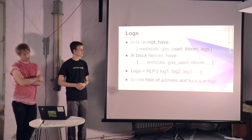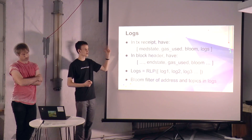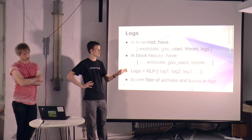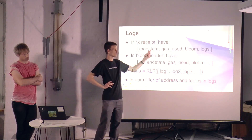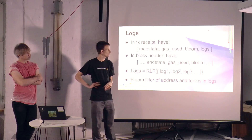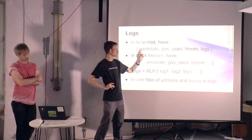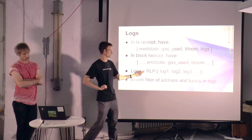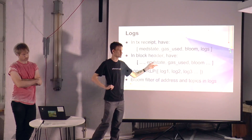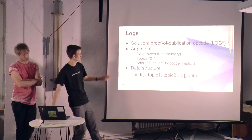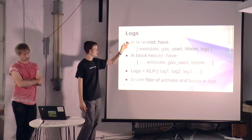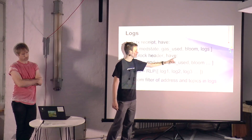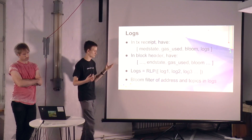So, receipts. The way a transaction receipt looks: the 'med state' is the state root after processing that particular transaction. Gas used is a counter of how much gas was used after processing the transaction. There's also a bloom filter — we'll talk about that a bit later — and logs, which is just an RLP-encoded list of each log, where each log is encoded as described. And in the block header we have the end state to match the intermediate states, gas used at the end, and a block-wide bloom filter.